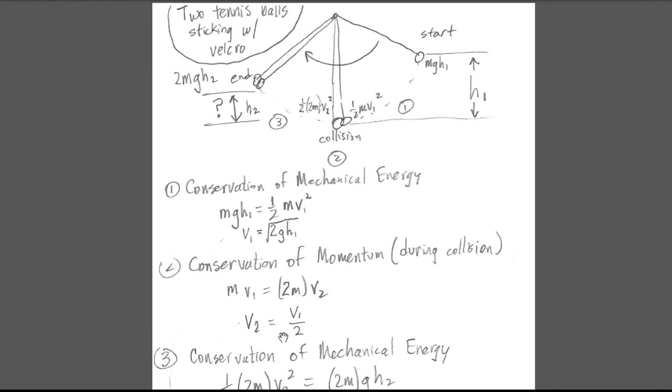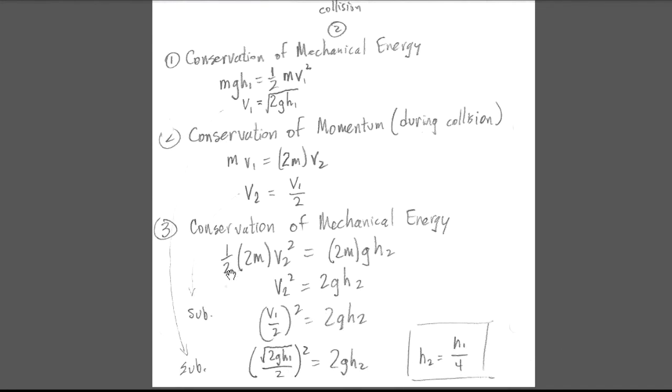Then in part three, the kinetic energy associated with their new velocity, V2, converts to potential energy as they rise up into the trees. And all of their kinetic energy down here converts to potential energy up here, which is MGH. But the mass is now 2M, and the height is our new height, H2.